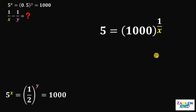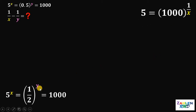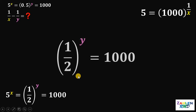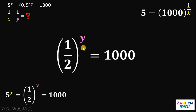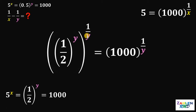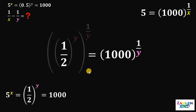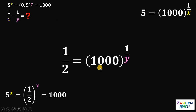Now let's set aside this result and take 1 half raised to y and 1000. Again, what we're going to do is to eliminate y as the exponent of 1 half. To do that, let's raise both sides by 1 over y, so y times 1 over y gives us 1. Therefore, the left-hand side becomes 1 half, and it is equal to 1000 raised to 1 over y.